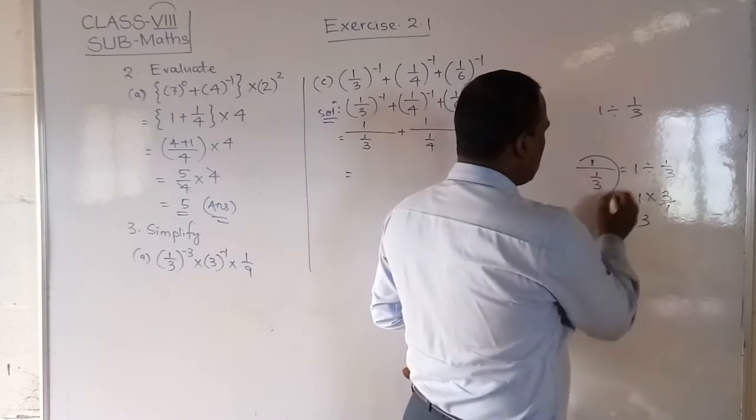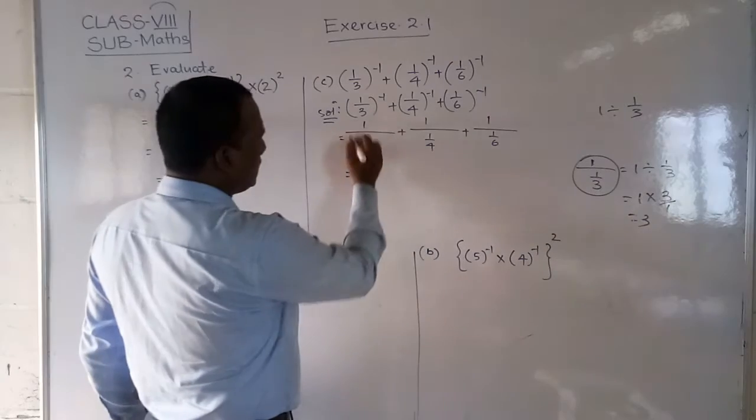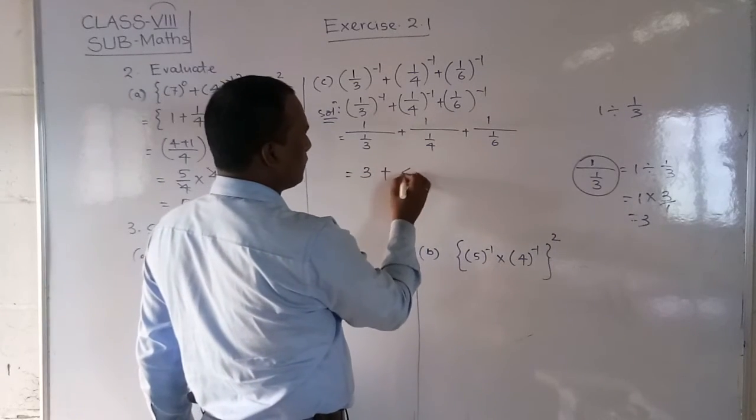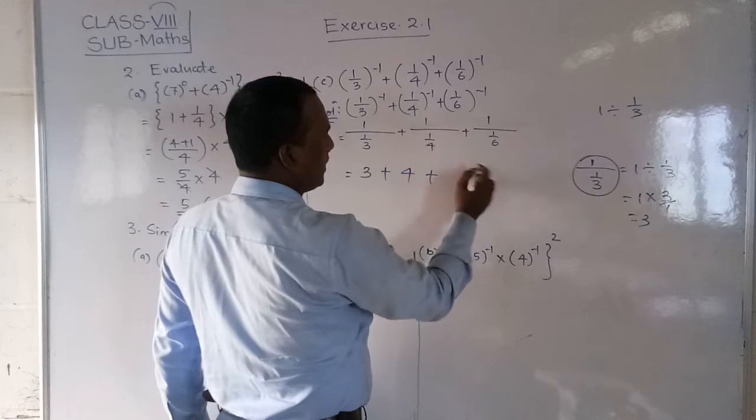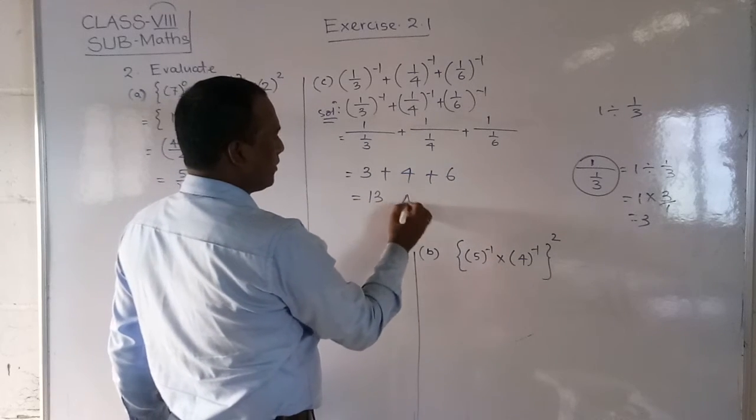If you solve it generally, the answer will come 3. This answer will become 3, plus this answer will come 4. Same, I will solve 6. So total answer will become 13.